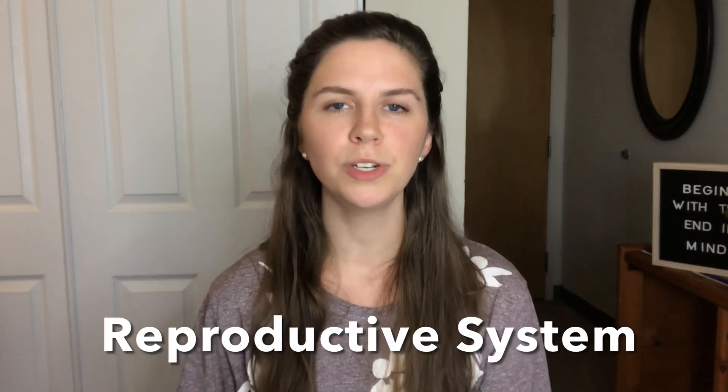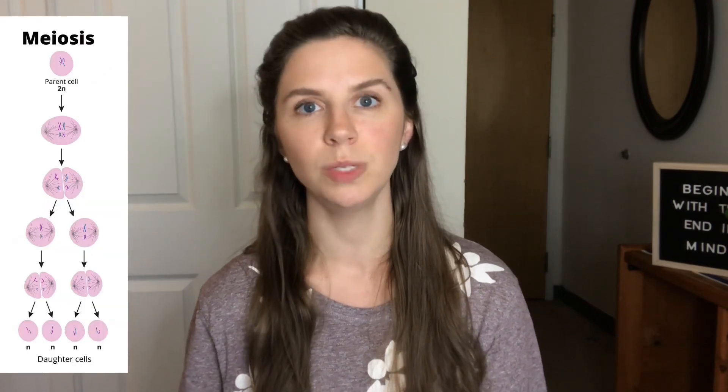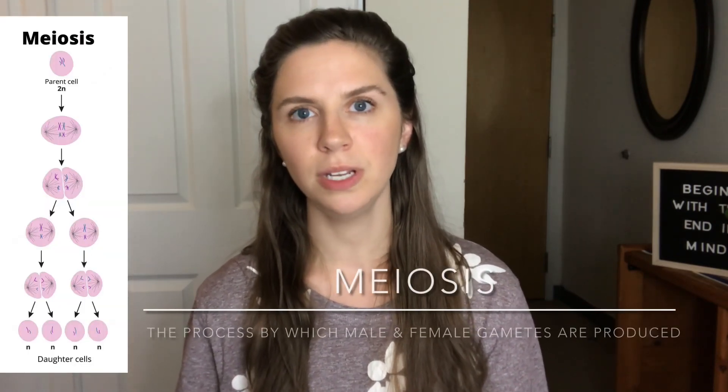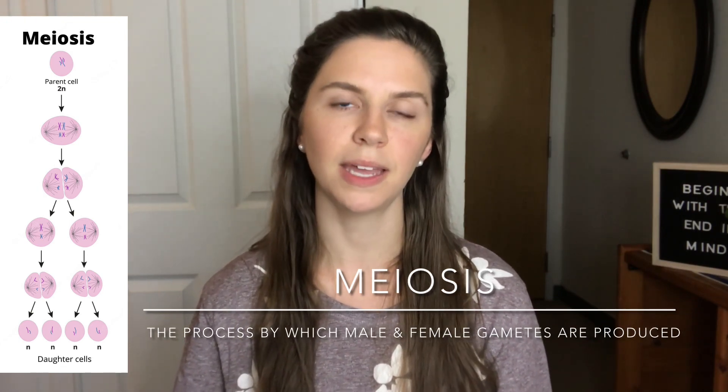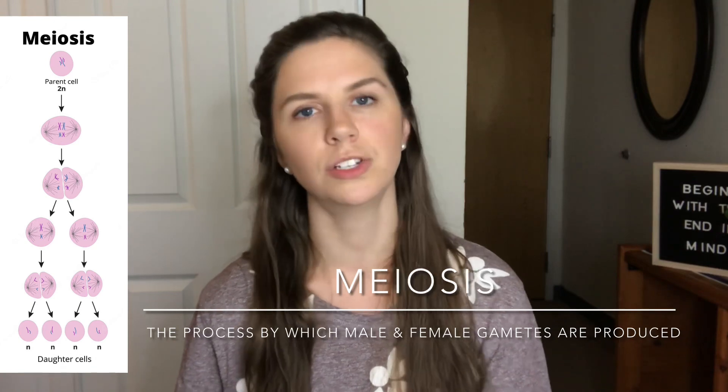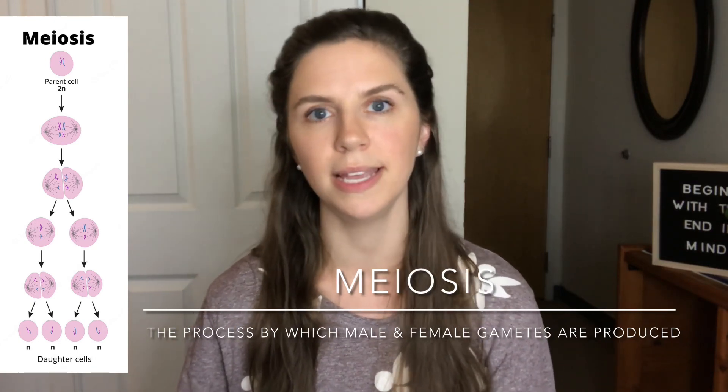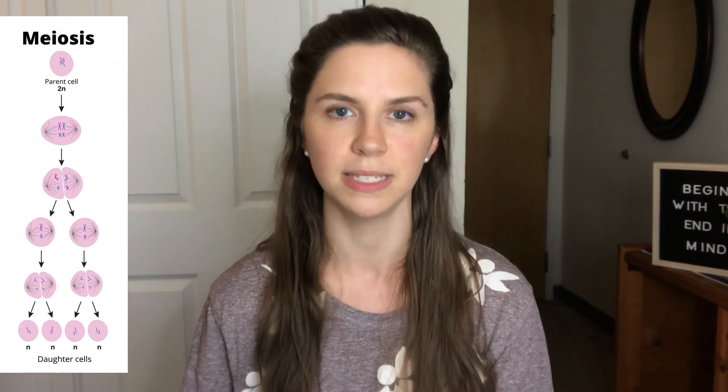Moving on to the reproductive system — be sure that you have memorized all the stages of meiosis, which is cell reproduction. Know that very well, including all the phases and what happens in those phases. You'll also want to know the key terms associated with reproduction: fertilization, the anatomy of the male and female bodies, and the hormones associated with reproduction for both male and female.